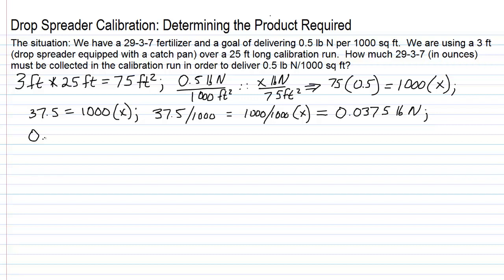So, we have 0.0375 pounds of nitrogen divided by 0.29, 29%, and that's our nitrogen analysis in 29-3-7. That equals 0.13 pound of 29-3-7.